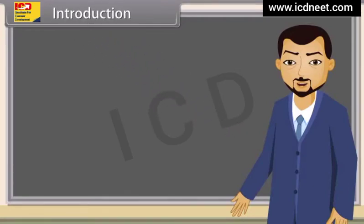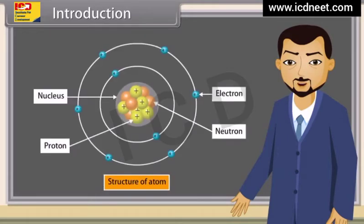Today I'll teach you the topic: structure of the atom. Atoms are the fundamental units of matter. Everything around us is made up of atoms. A typical atom consists of a nucleus of protons and neutrons, with electrons orbiting this nucleus.